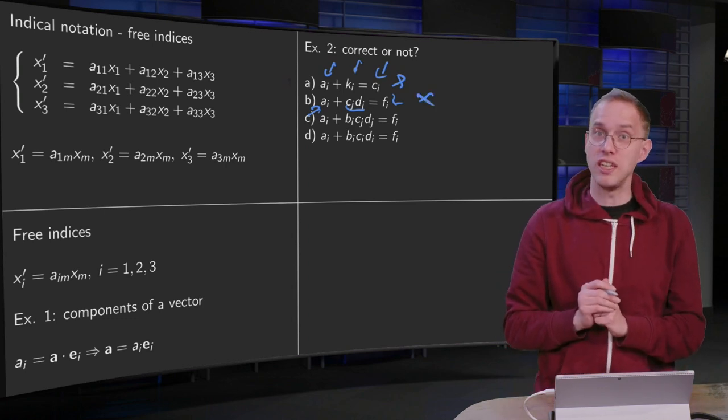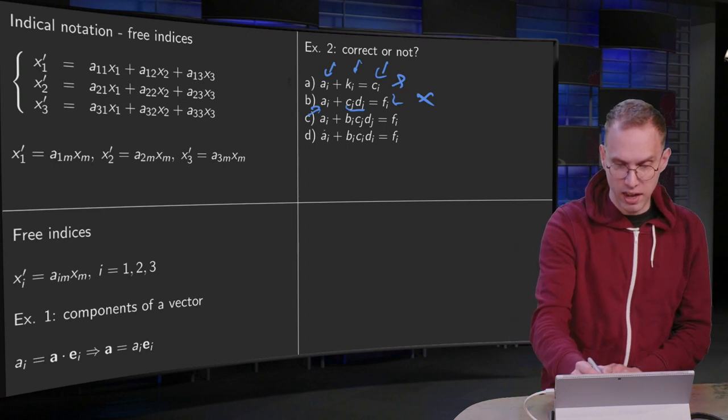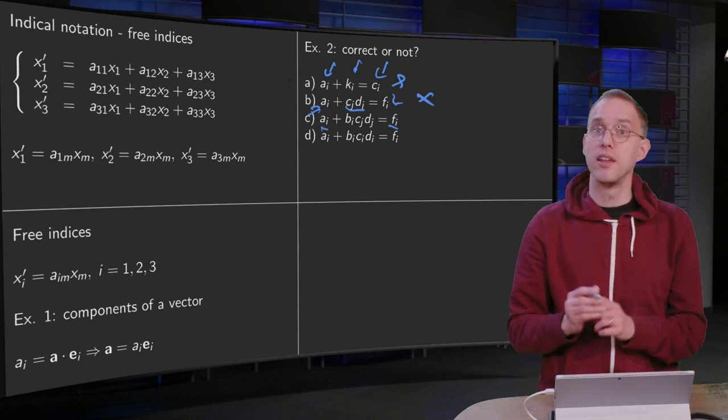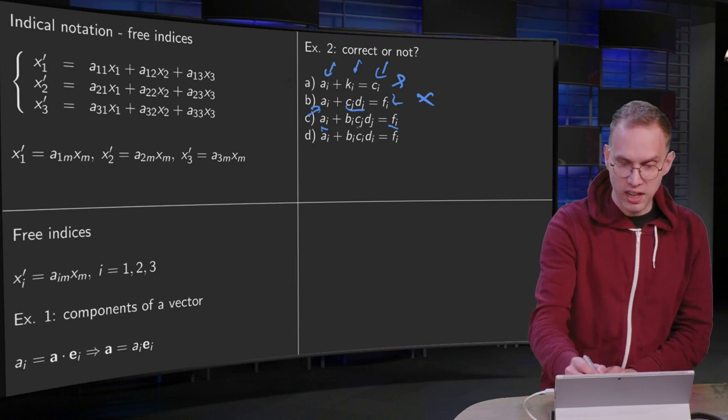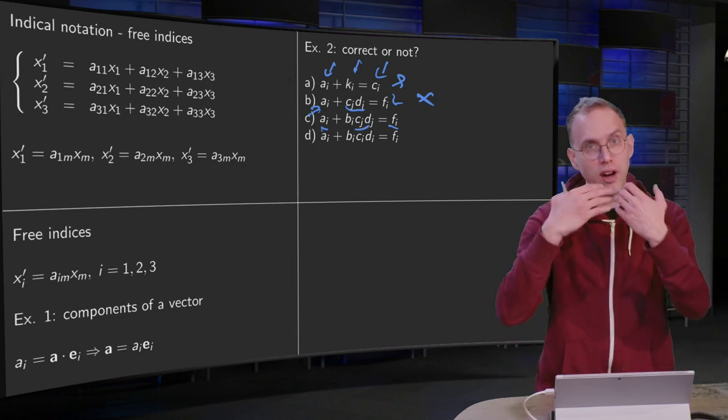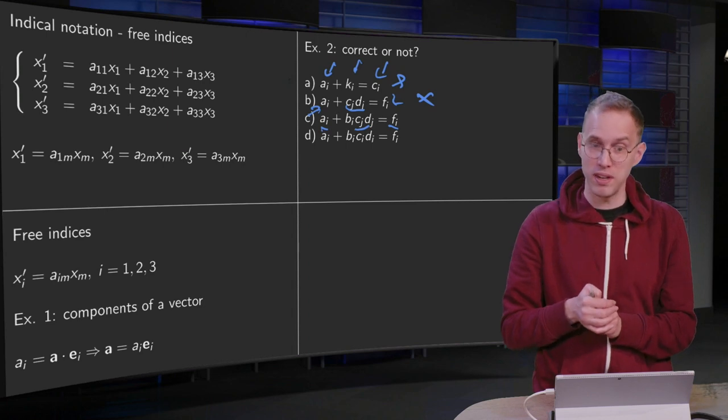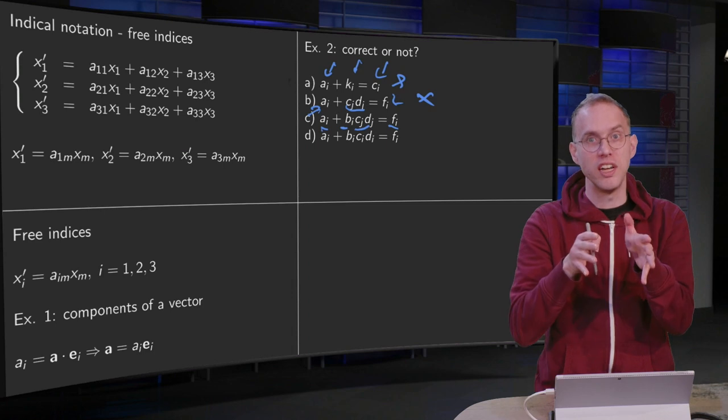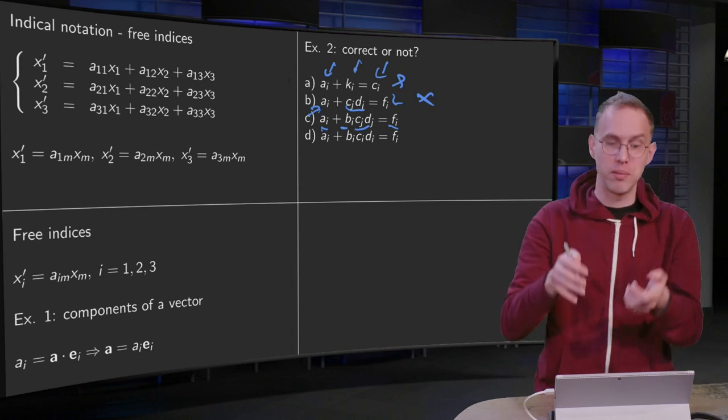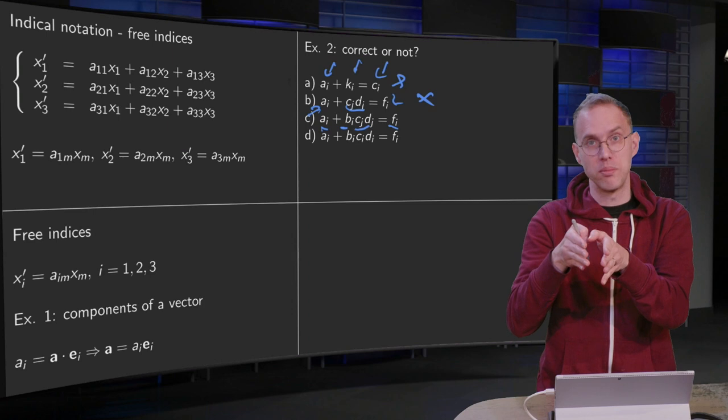Let's take a look at c. Here we have an ai and an fi, so that's okay—the indices balance. Now the cj dj is summed over, so after summing these indices disappear, times bi. So we have ai plus bi times some number equals fi. That's okay—indices balance again.